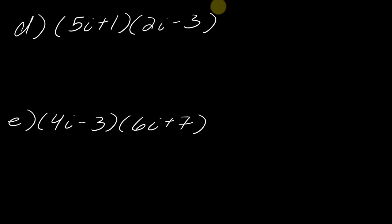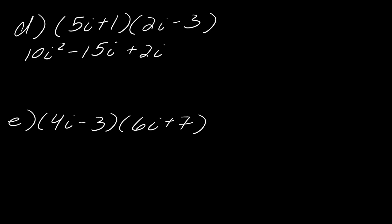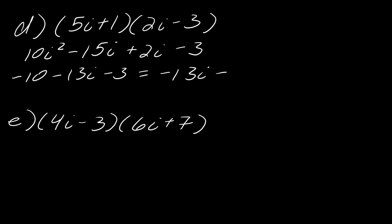As I'm FOILing: first, 5i times 2i gives 10i squared; 5i times negative 3 gives minus 15i; i times 2i gives plus 2i; and 1 times negative 3 gives minus 3. Now notice the plot twist — we've got i squared so we have to rewrite. This gives negative 10, and combining the i terms gives negative 13i, and the constants give minus 3, for a final answer of negative 13i minus 13.